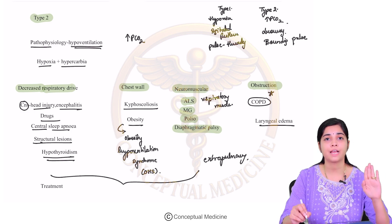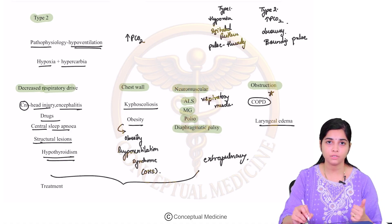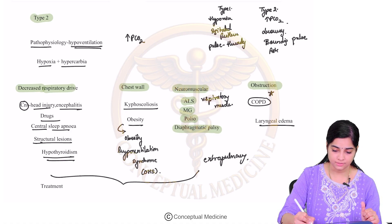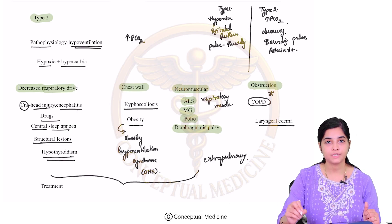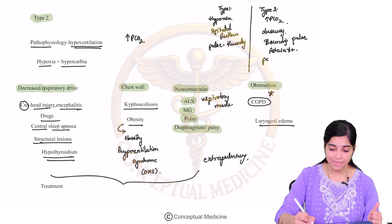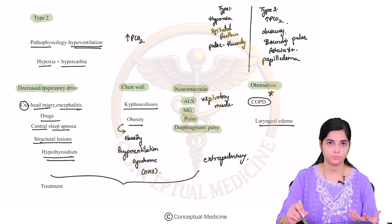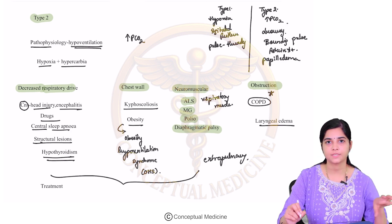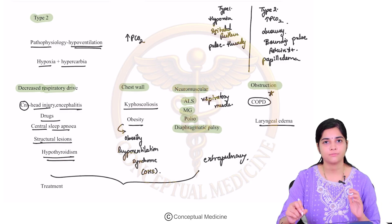Asterixis — flapping tremors — is found in type 2 respiratory failure. Presence of asterixis is a characteristic feature of type 2. Papilledema is also seen in type 2. This is how you differentiate clinically between type 1 and type 2 respiratory failure, and you have understood the different causes for both.